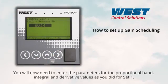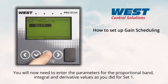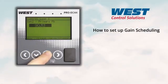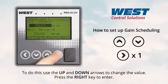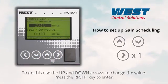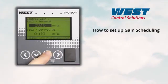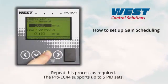You will now need to enter the parameters for your proportional band, integral and derivative values, as you did for set one. To do this, use the up and down arrows to change the value and press the right key to enter. Repeat this process as required.